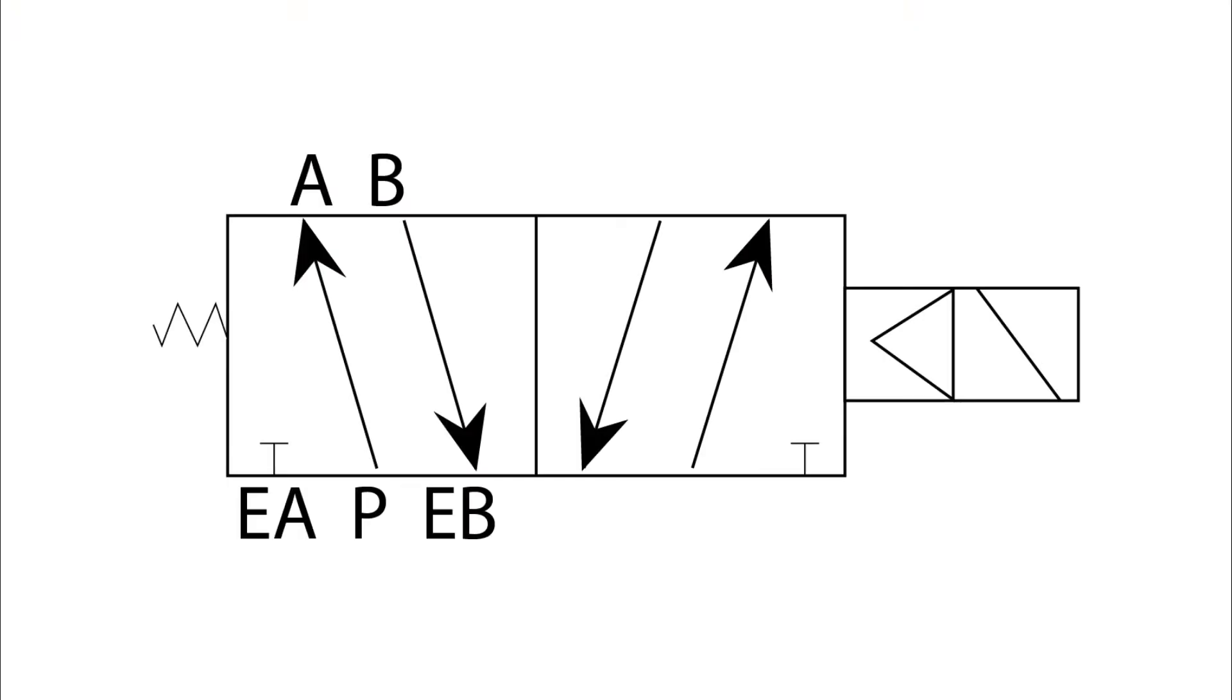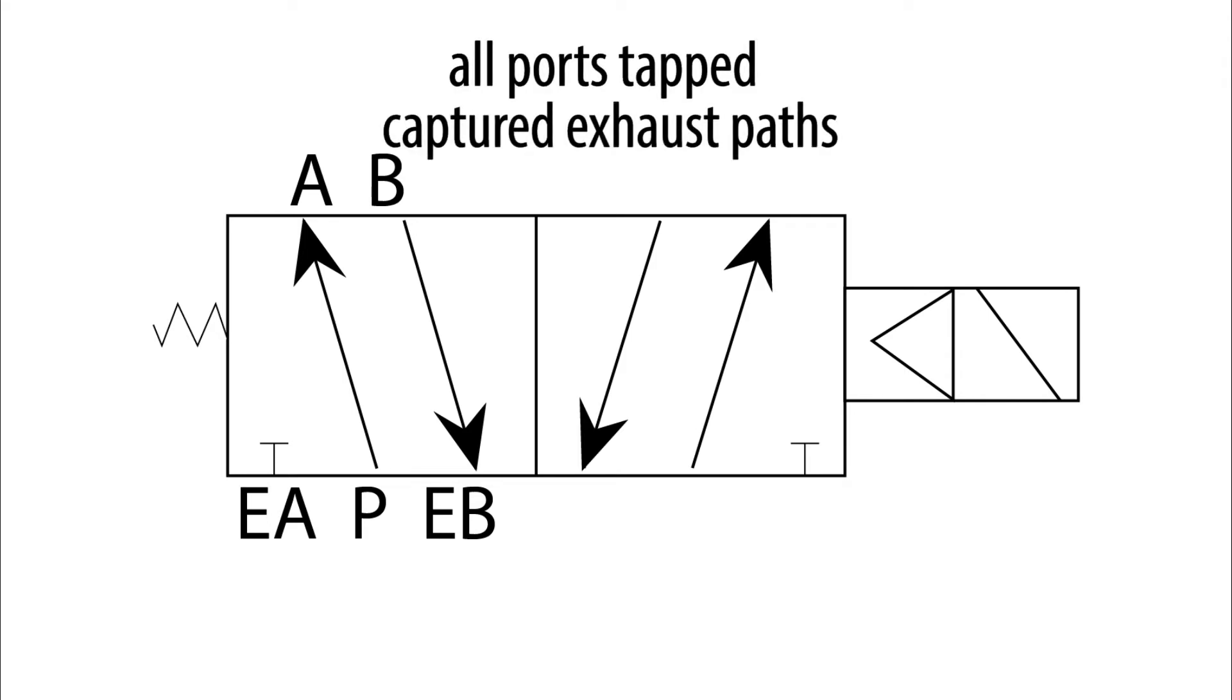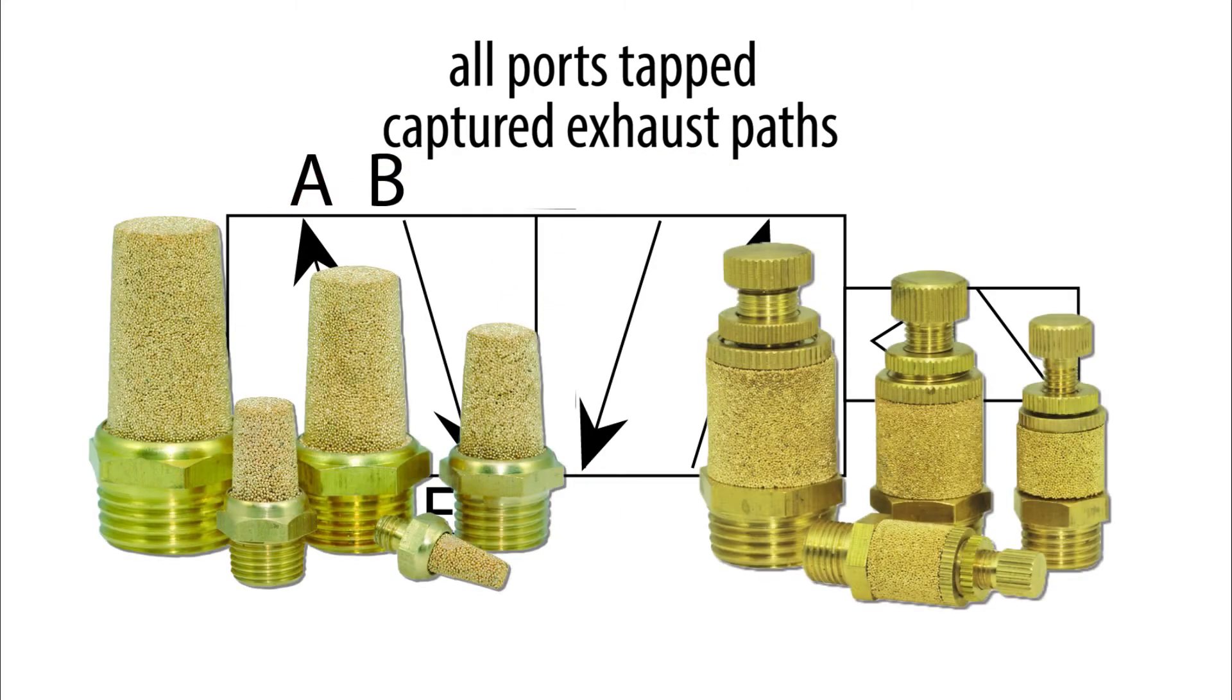So here's how we do this. Maximatic valves all have ports tapped and captured exhaust paths. This means two things. First, the valves have independent flow paths from output to exhaust, while other valves can sometimes use a common exhaust port. Second, the exhaust ports are tapped for use with mufflers or speed controls.